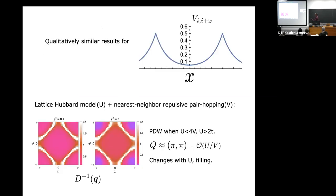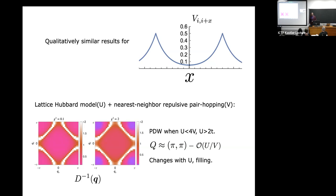We find similar things for a non-monotonic BCS coupling. Armed with this intuition, we can study lattice models in Migdal-Eliashberg theory — for instance a Hubbard model on a square lattice with nearest-neighbor hopping and nearest-neighbor repulsive pair hopping. When u is less than four times the nearest-neighbor pair hopping and greater than twice the hopping, you get pair density wave solutions. The ordering wave vector is close to (π, π) but depends on the ratio u over the hopping — it's not exactly (π, π).